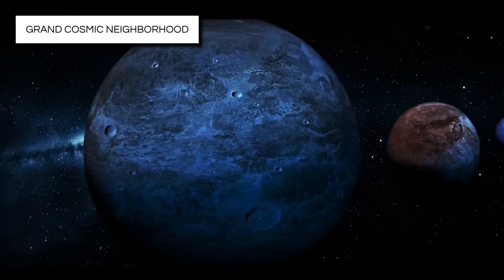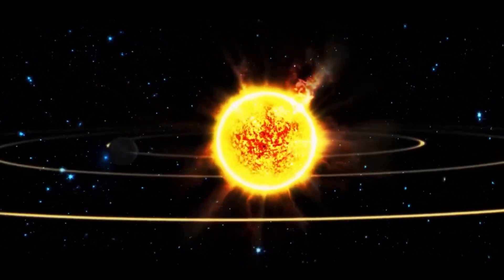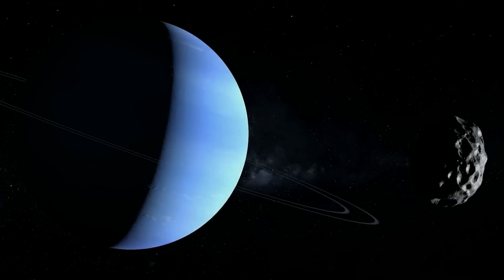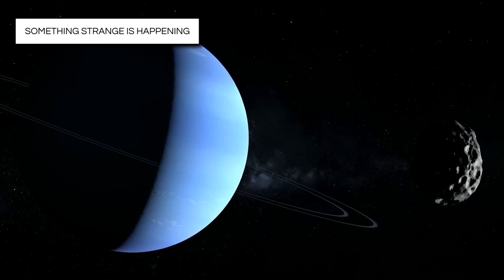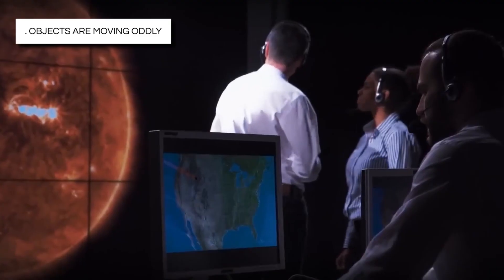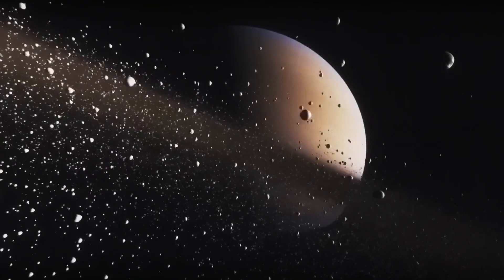Picture our solar system as a grand cosmic neighborhood, where the planets are like familiar houses and we know their locations by heart. But wait, something strange is happening way out past Neptune's turf. Objects are moving oddly, leaving scientists puzzled. What could it be?